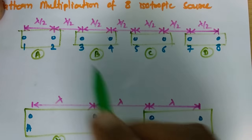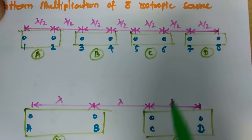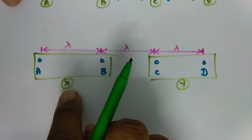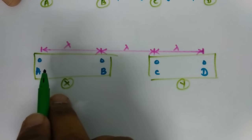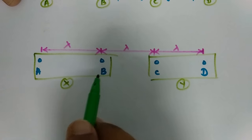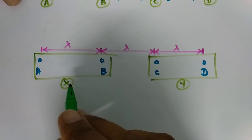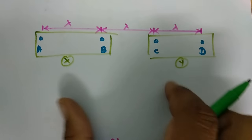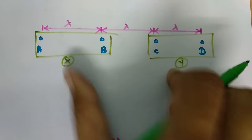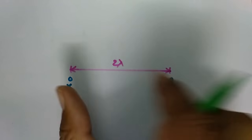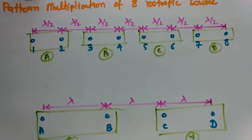Now A, B, C, D have a separation of lambda. So group pattern of A and B gives pattern of X. That will be unit pattern of A or B multiplied by group pattern of A and B — that is how we will calculate. We will get pattern of X and similarly pattern of Y. Now spacing between X and Y is 2 lambda. So resultant pattern is unit pattern of X multiplied by group pattern of X and Y.